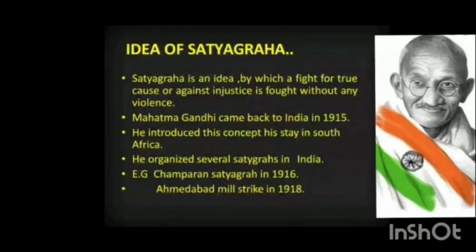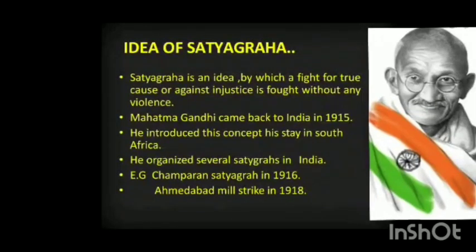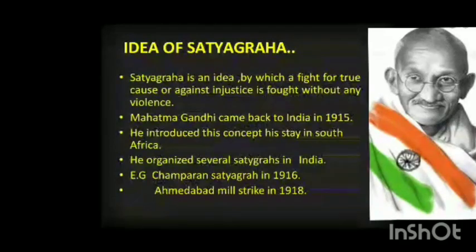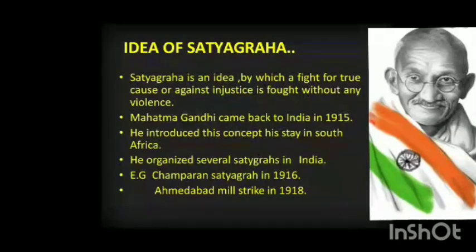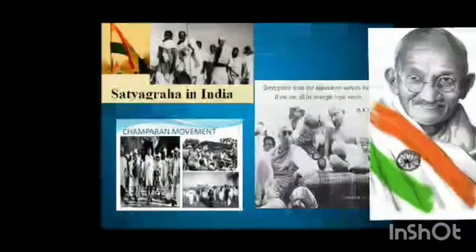Gandhiji organized several satyagrahas in India. In 1916 in Champaran, Bihar, he inspired peasants to fight. In 1917 he organized a satyagraha in support of peasants in Kheda, Gujarat, who could not pay revenue as crops had failed. In 1918 in Ahmedabad, he organized a satyagraha for cotton mill workers fighting for limiting working hours.